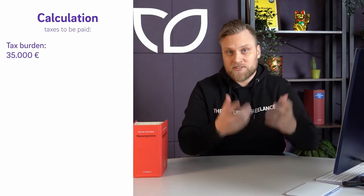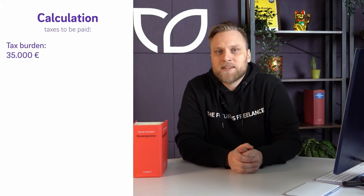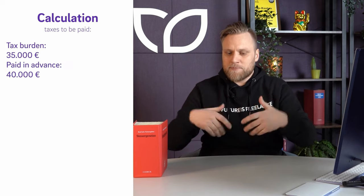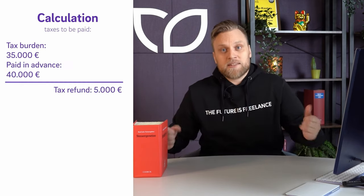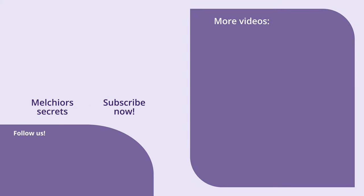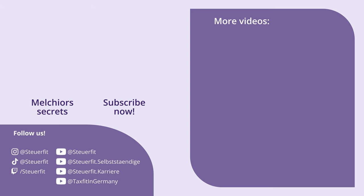When the tax assessment arrives, the calculation shows income of €100,000 with a tax burden of around €35,000. Subtracting the prepayments already made of €40,000 gives a tax refund of €5,000. Each tax assessment is also usually the advance notice for the next year, indicating what you must prepay quarterly. If you still have a question or something is not quite clear, just ask in the comments section. Check out one of our upcoming videos — thank you very much.